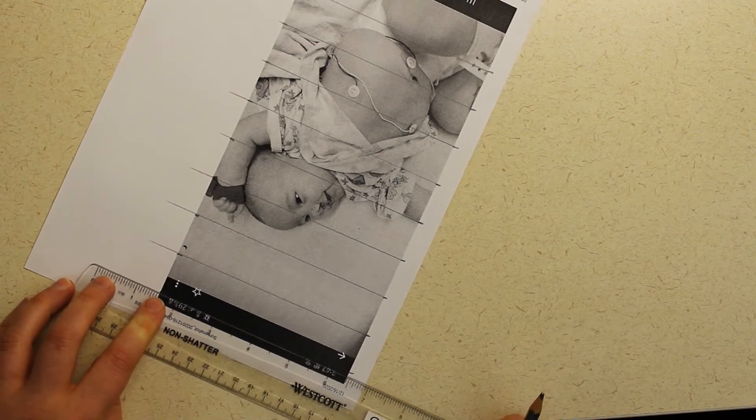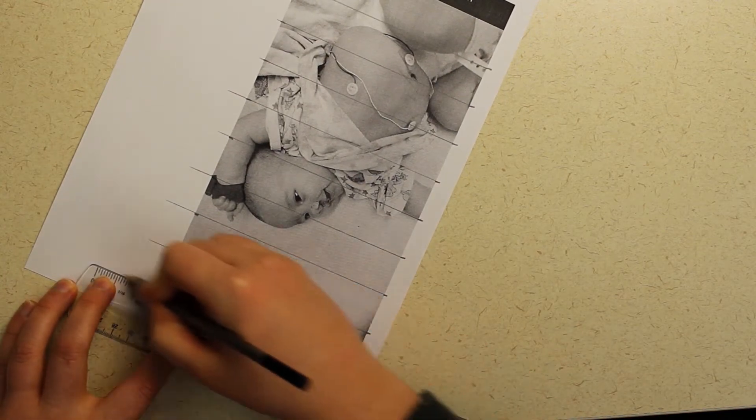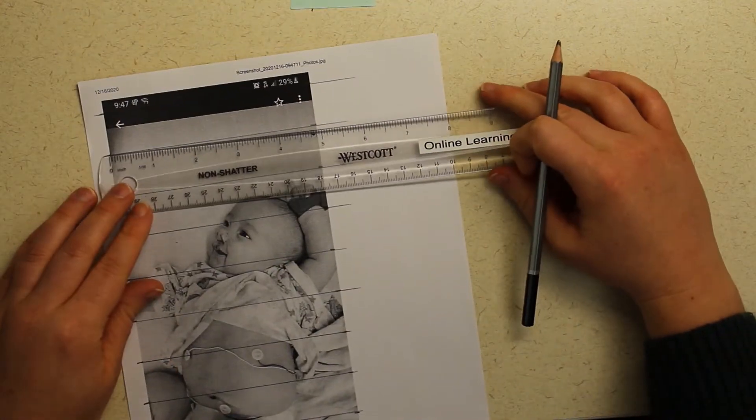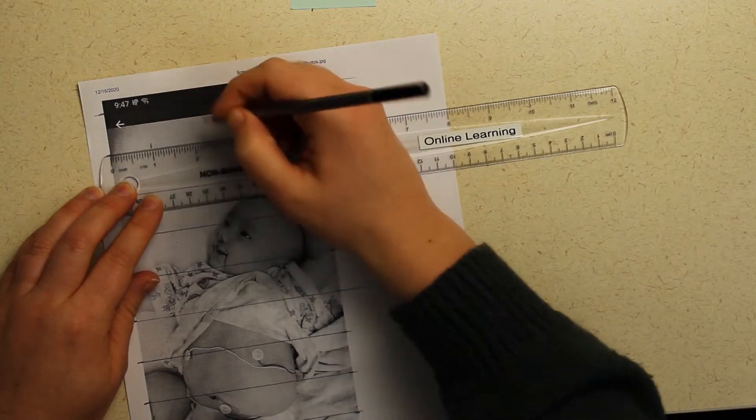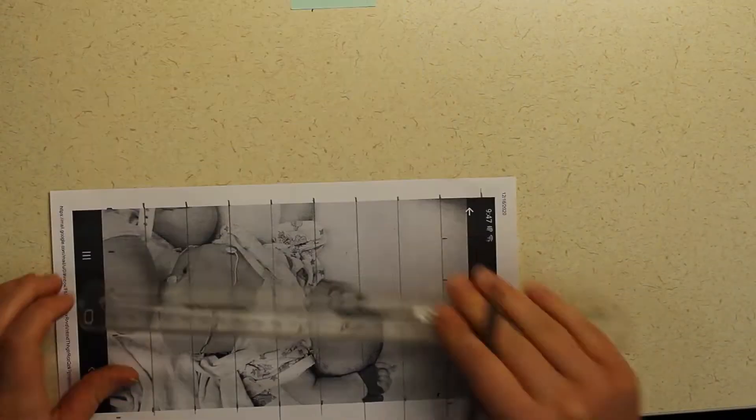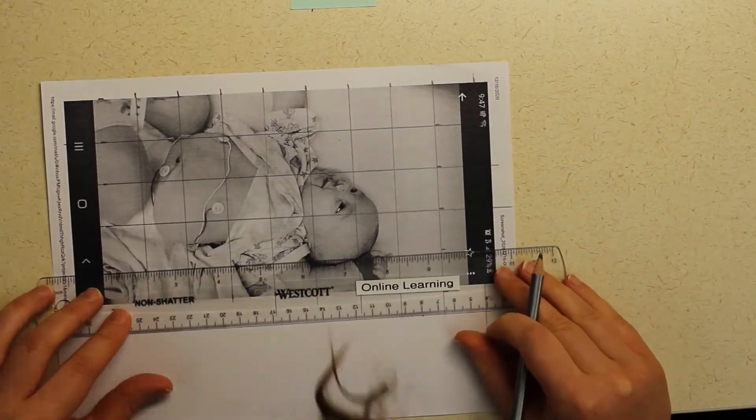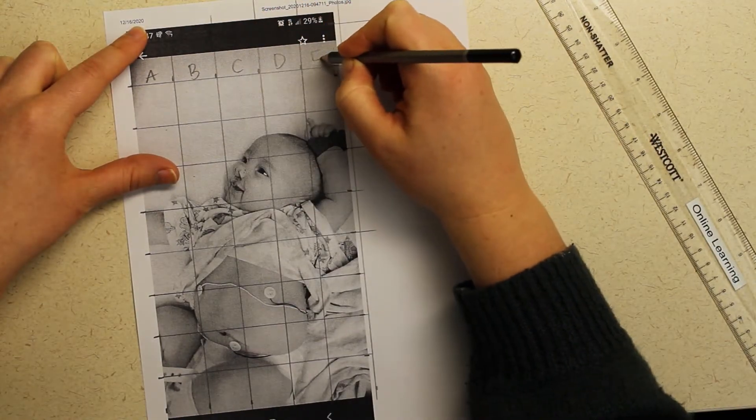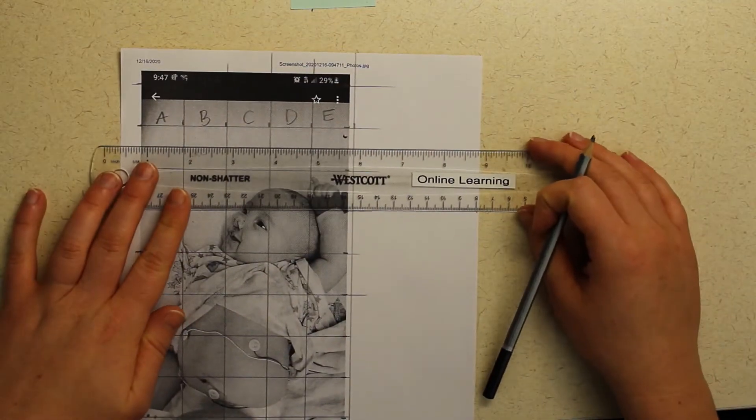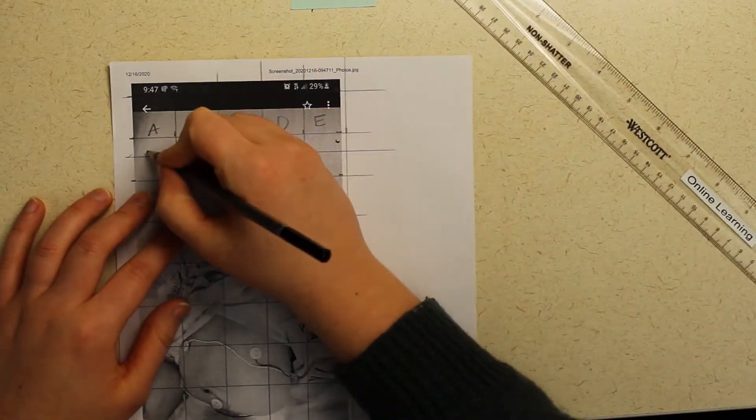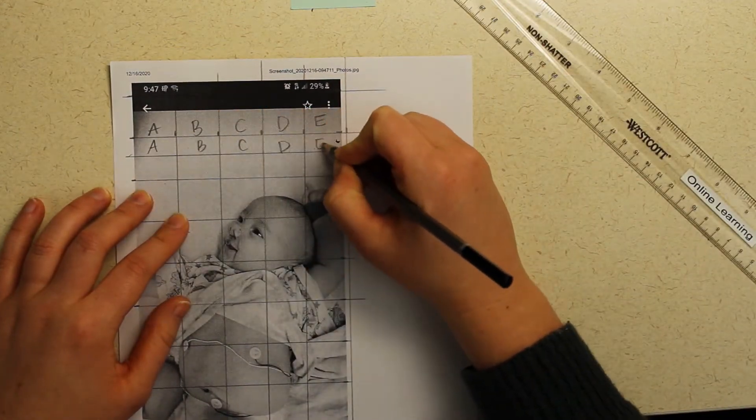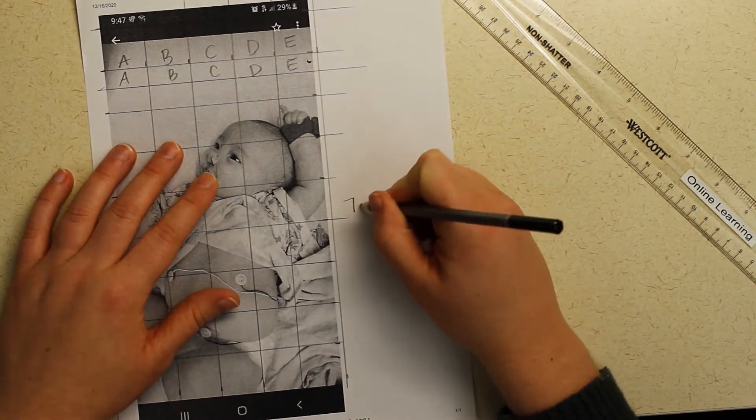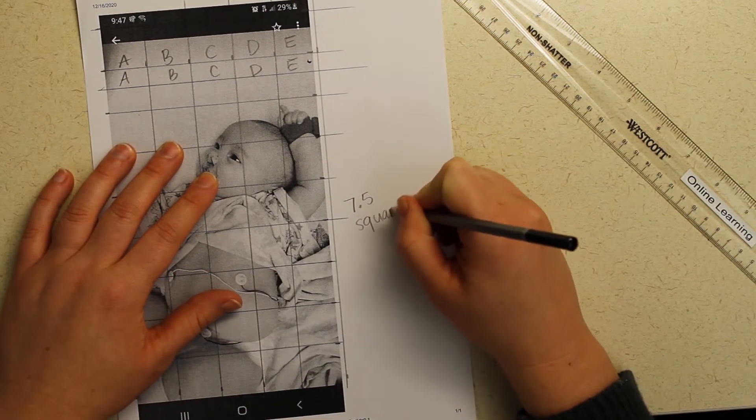You do the same thing for the other direction. Draw one inch marks on the top and on the bottom and then connect the dots to create lines. I put letters across the top and numbers across the side. That's going to help me know where I'm at when I get to actually drawing this thing. I decided to take off some of the top and do a half inch box to take some of the more empty space out of my composition.